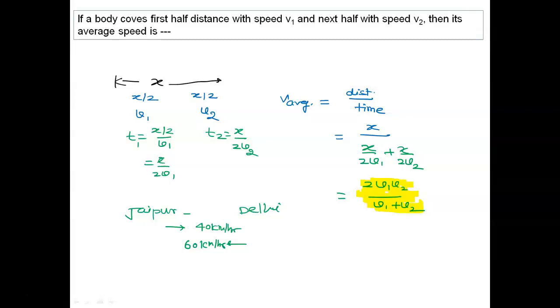Children, you can't say 60 plus 40 divided by 2. Here I have to think the same situation which I have started here: body covering the first half distance with speed v1. I said this is the first half of the journey, this is the next half of the journey. When there are two half distance journeys given, I have to use the formula 2v1v2 upon v1 plus v2.